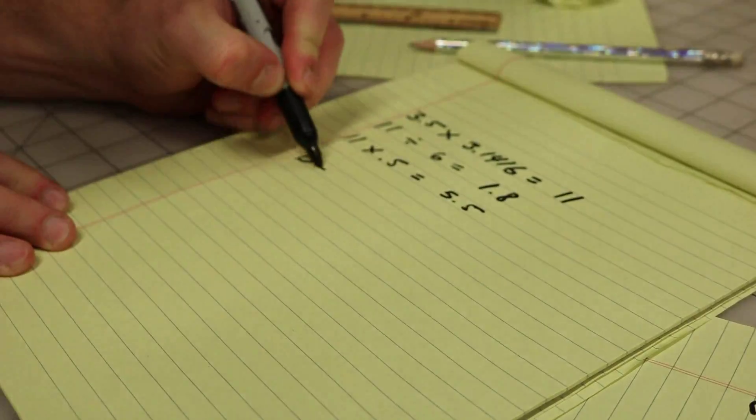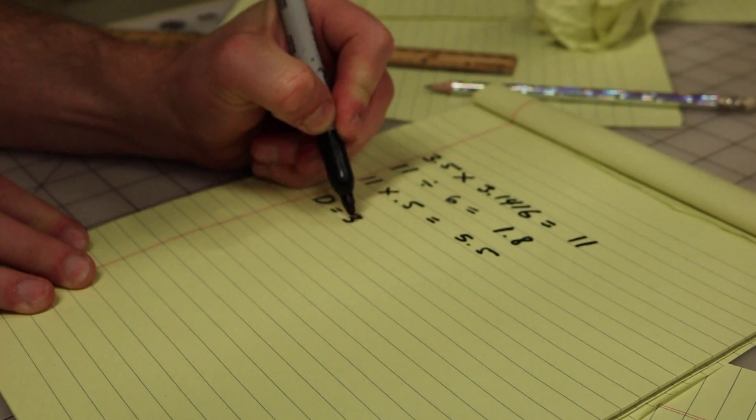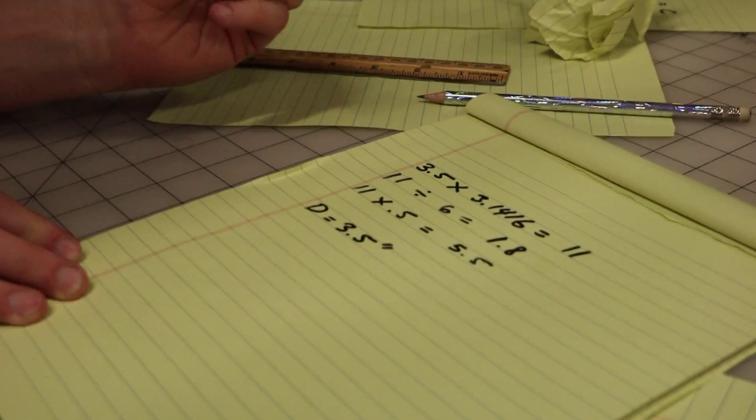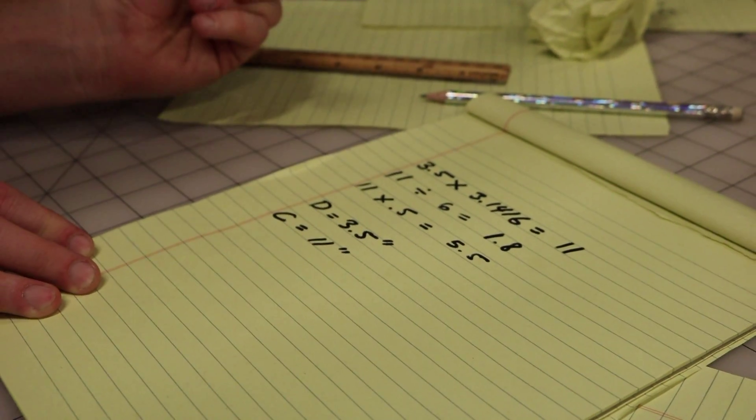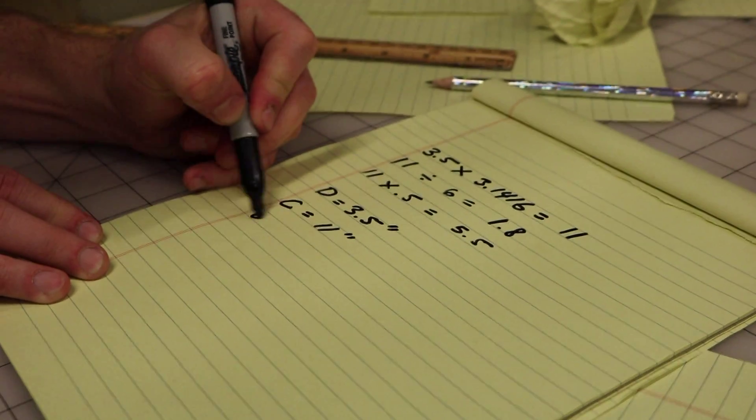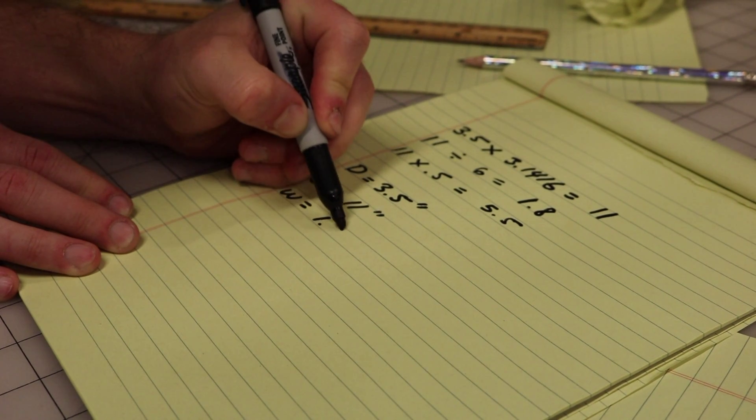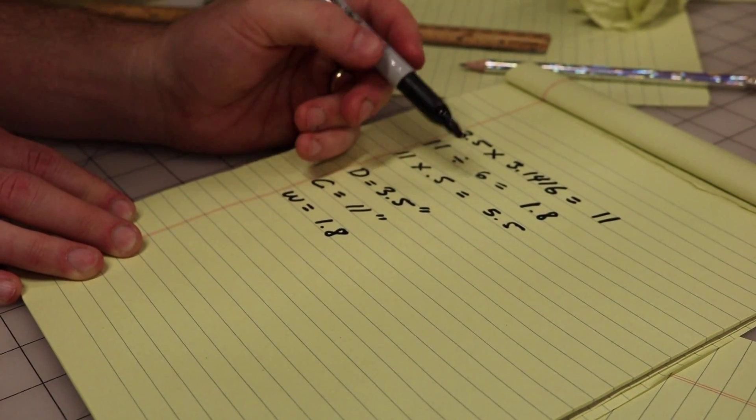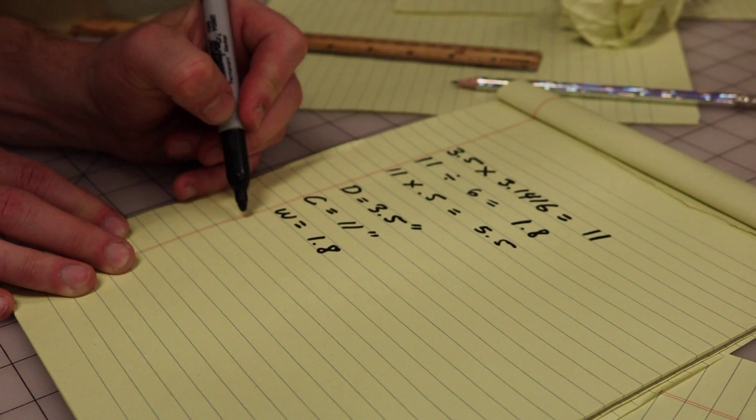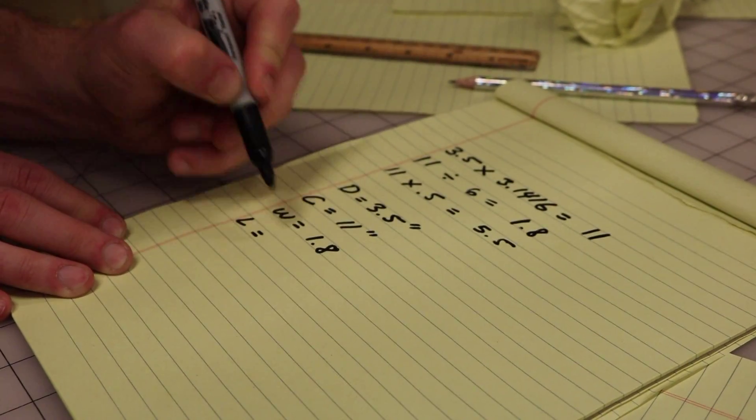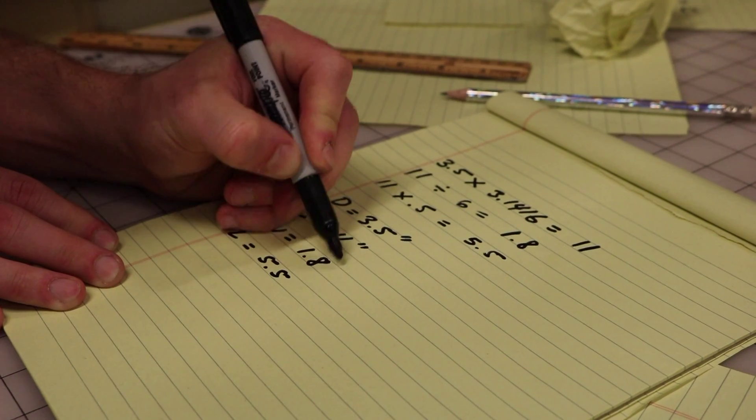So now we know that our diameter is going to equal 3.5 inches. Our circumference is going to equal 11 inches. Our width is going to equal 1.8, approximately 2 inches. And our length is going to equal 5.5 inches. So now we have all the information we need to turn a flat piece of foam into a sphere. Now I'll show you how to put it into practice.